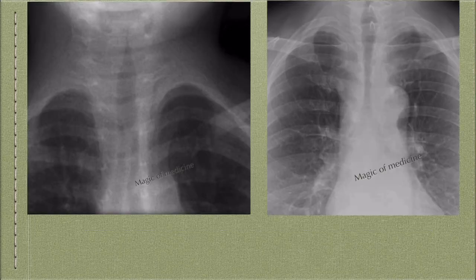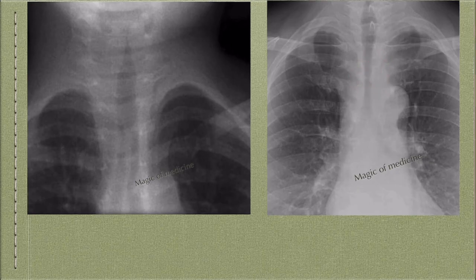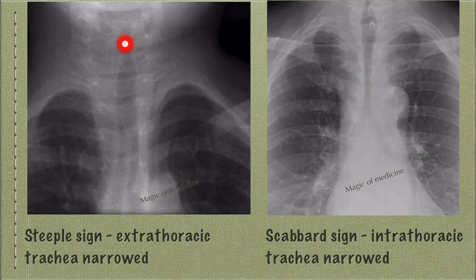Now a spotter for you: look at these two images — they are poles apart. In the first image, the extrathoracic part of the trachea is narrowed, while in the second image the intrathoracic part is narrowed. One entity involves the extrathoracic trachea and another involves the intrathoracic trachea. The answer: the first is the steeple sign, where the extrathoracic trachea is narrowed, and the second is the scabbard sign or saber-sheath trachea, where the intrathoracic trachea is narrowed.